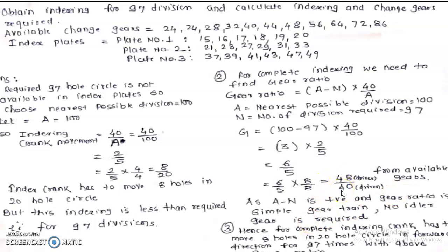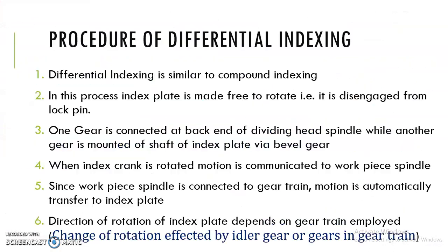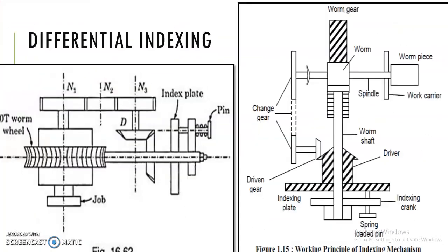The driver gear (48 teeth) is attached to the spindle and the driven gear (40 teeth) is attached to the bevel gear position, as shown in the diagram. This forms your simple gear train.